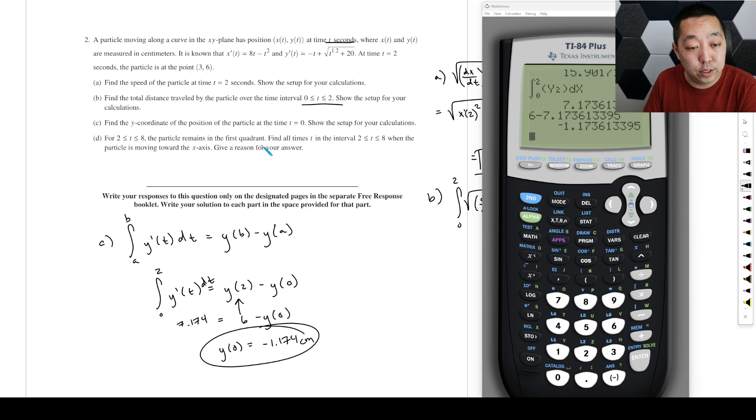For two to eight, the particle remains in the first quadrant. That means x and y are both greater than zero. Find all times when the particle is moving towards the x axis. Give a reason for your answer. Well, so if I'm in the first quadrant, then what I want is my speed vector to be toward the x axis, means I need the y component of the velocity to be negative. So because the position y of t is greater than zero, I want to know where y prime of t is less than zero because then it would be pointing towards the x axis. Then it would have a negative y velocity. So I want to know when this is less than zero.